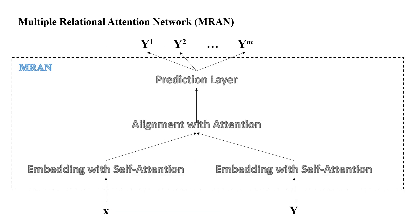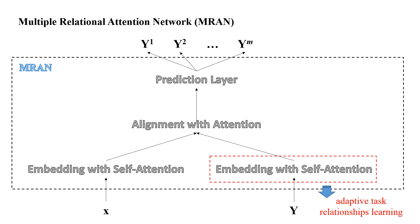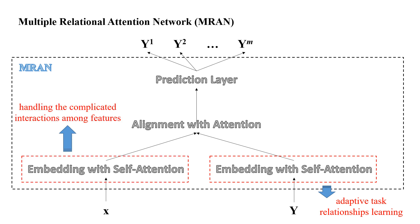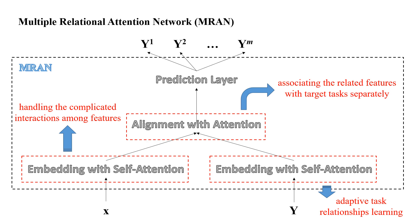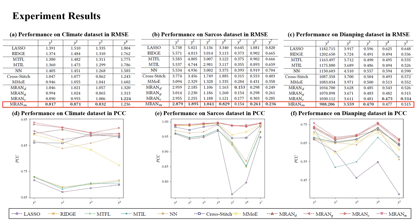Along this line, we propose a Multiple Relational Attention Network framework for Multi-Task Learning, in which three types of relationships are considered. First, we use an Embedding Module with Self-Attention for learning adaptive task relationships. Second, a similar Self-Attention mechanism is used to model the interactions of features and handle the complex interactions among features. Finally, an Alignment Module with an Attention mechanism is designed for associating the related features with targeted tasks. Our model achieves the best performance compared with all baseline methods.